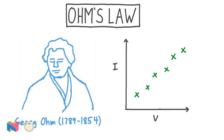In this video, we're going to be talking about Ohm's law. This law was devised by the German physicist George Ohm in the 1800s. As we'll see, this law has to do with electric circuits, and in particular, it connects the current, voltage, and resistance in those circuits.